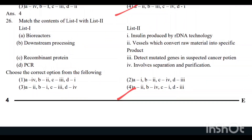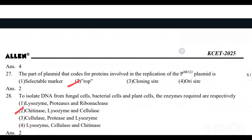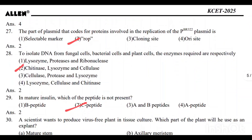Question number 26: Match the following — Option 4 is the correct answer. Question number 27: The part of the plasmid that codes for the proteins involved in the replication of the pBR322 plasmid is ROP. That is the correct answer.